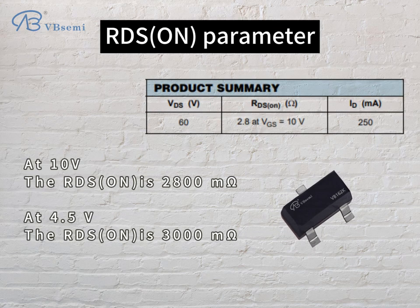RDS-ON parameter: at 10V, the RDS-ON is 2,800 mΩ; at 4.5V, the RDS-ON is 3,000 mΩ.